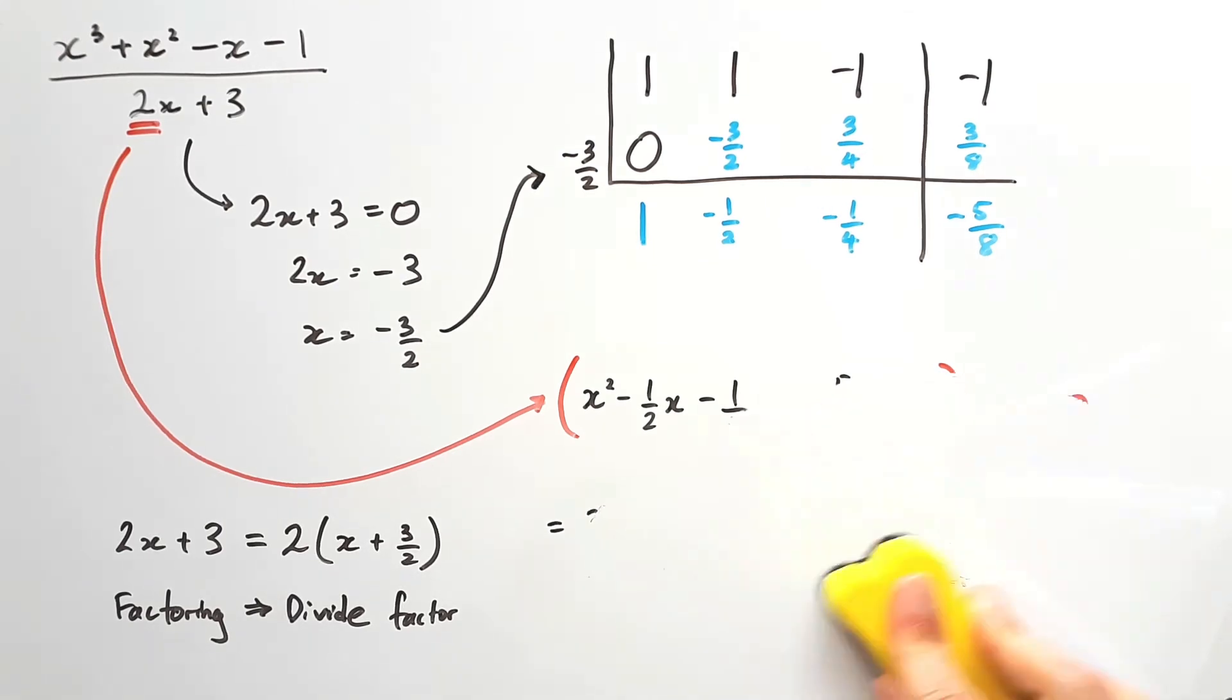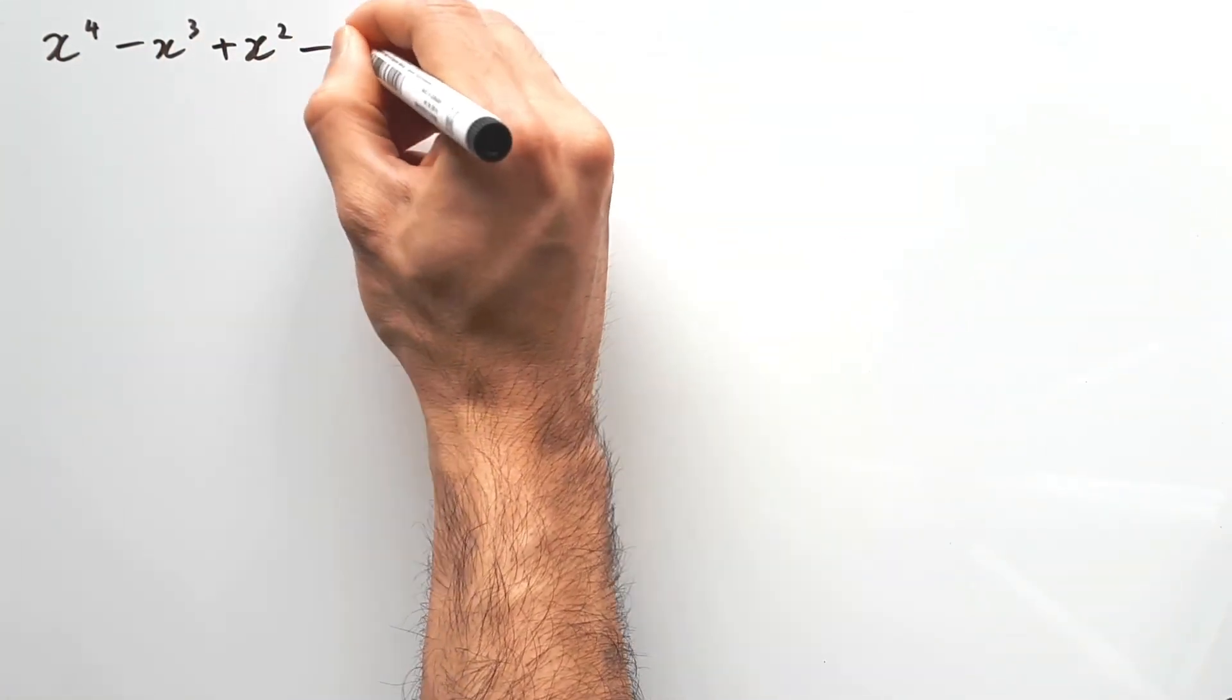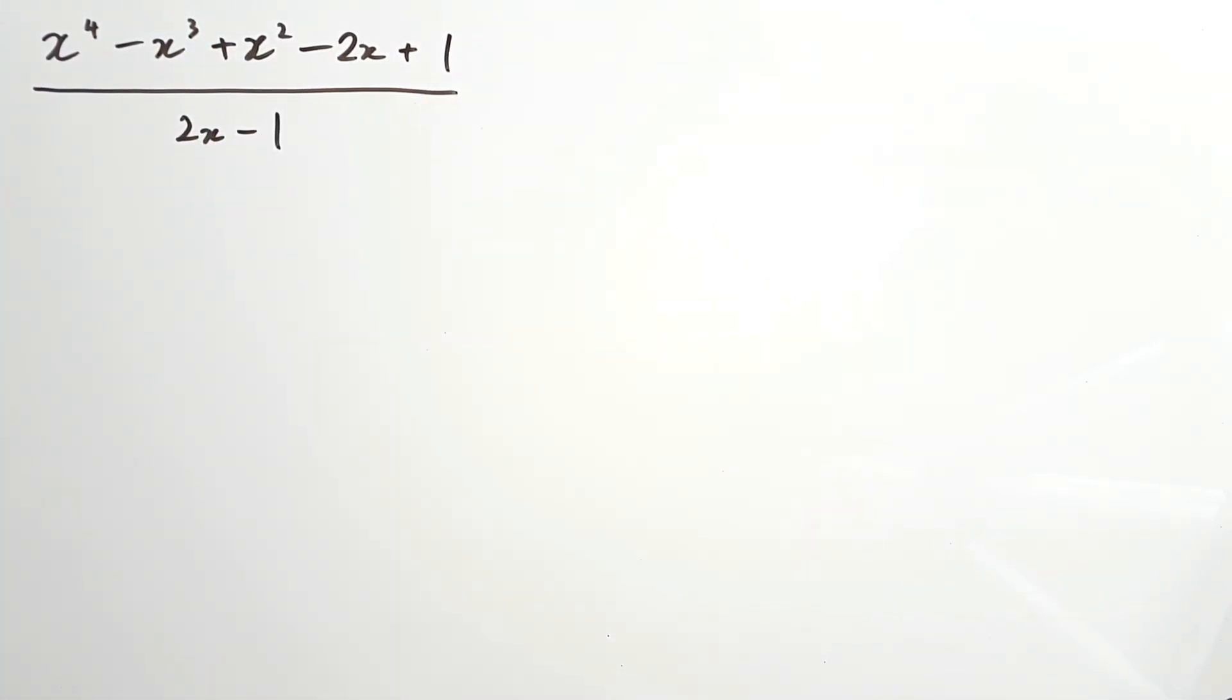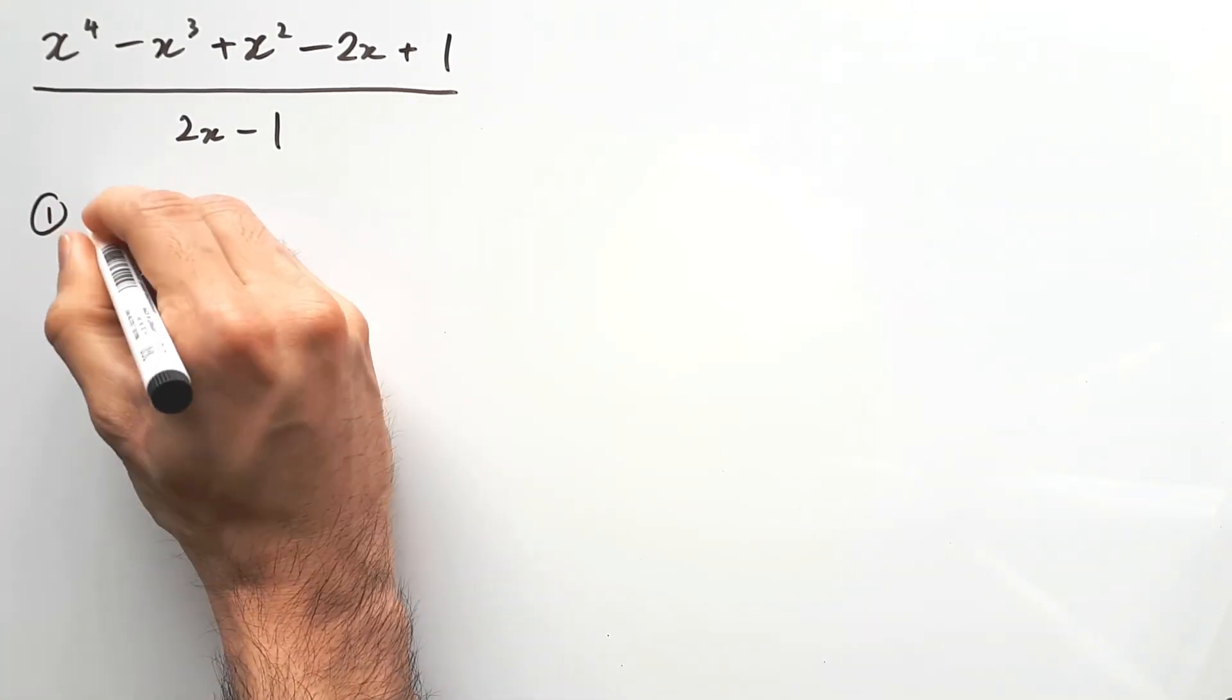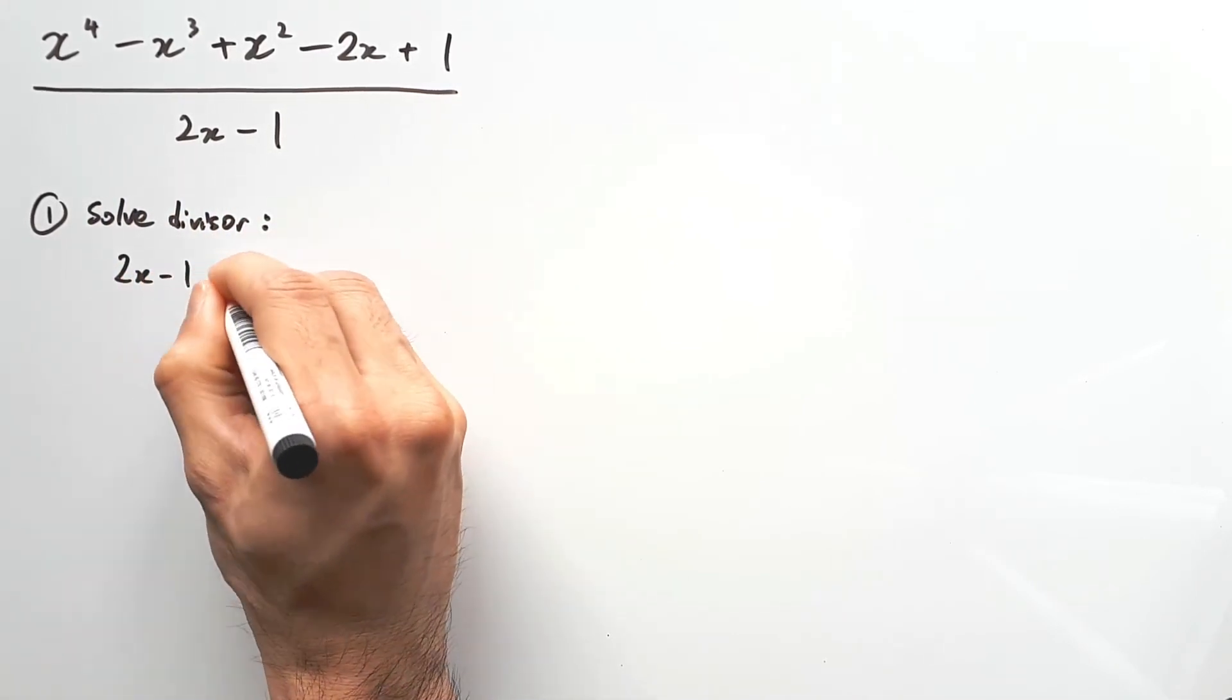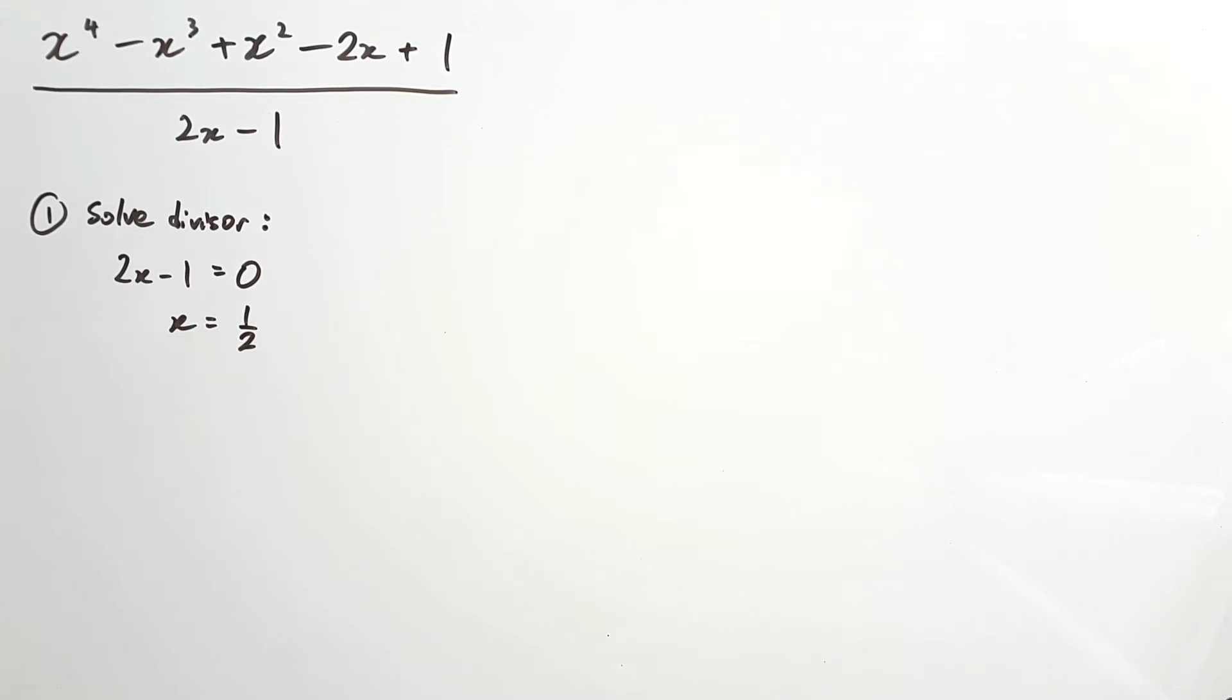Okay, let's try another question. x to the power of 4 minus x cubed plus x squared minus 2x plus 1 divided by 2x minus 1. So again, here we have a non-monic, because there's a 2 in front of the x, and our first step is to solve that divisor, so that we can figure out what to use for our synthetic division. Solving 2x minus 1 equal to 0 gives us x as positive half. Okay, so that's going to go in later.